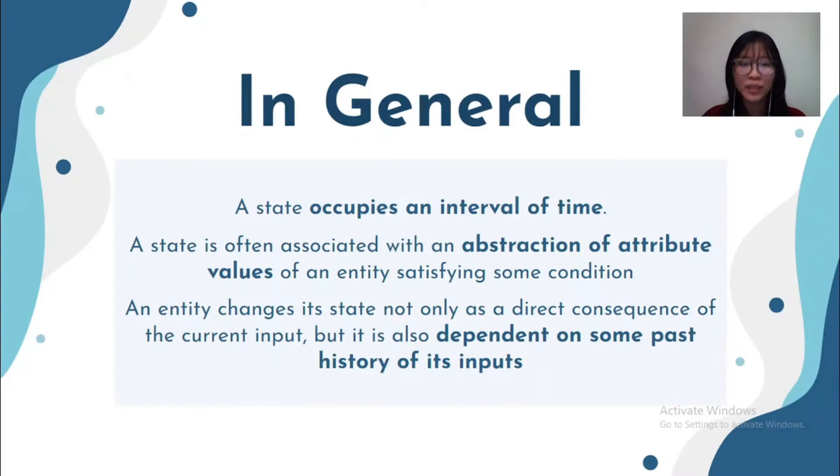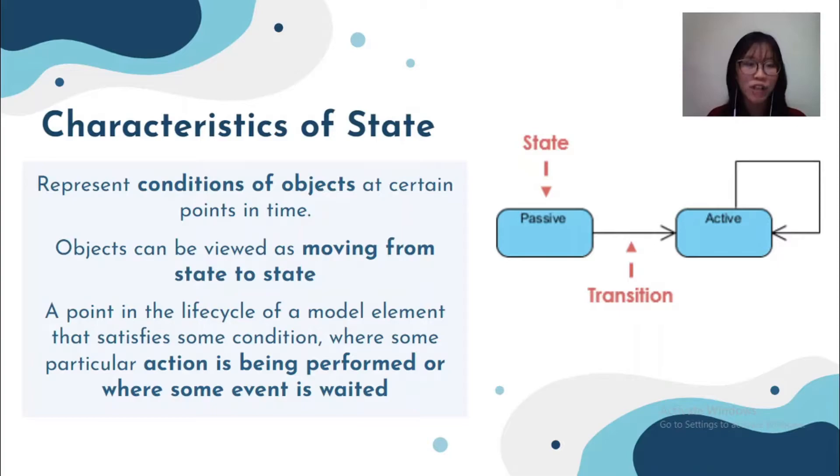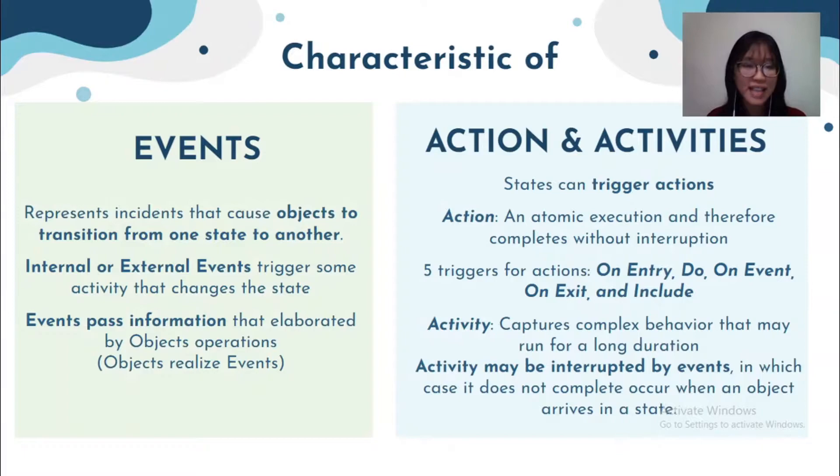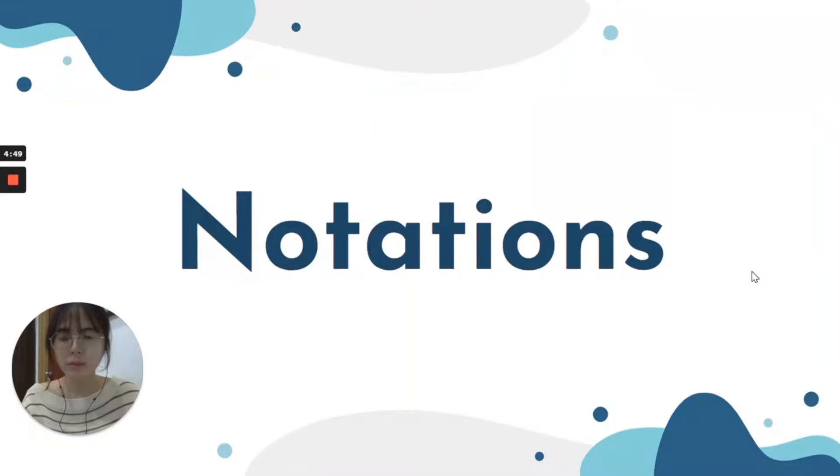Then we continue with the characteristic of state machine notation. In general speaking, a state occupies an interval of time, and it's often associated with an abstraction of attribute values of an entity that satisfies certain conditions. As the state represents the condition of an object at certain point in time, the object can be viewed as moving from state to state. The transition of the object from one state to the other state is known as automatic transition if there is no event and action occurs. The difference between the action and activities is that the action is an atomic execution and it can be complete without any interruption. Whereas the activities is an ongoing activity and it might run for a long duration, and it might be interrupted by the event where it will cause the event cannot be completed.